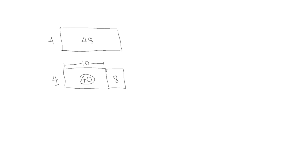I have a second rectangle that also has one side of 4. I know that 4 times 2 is 8, so the other side would be 2. If I add these two sides together, I get the missing side: 10 plus 2 is 12. So if I have an area of 48 and one side is 4, the other side would be 12. I can check with multiplication: 2 times 4 is 8, and 4 times 1 is 4, and I get back to my area.